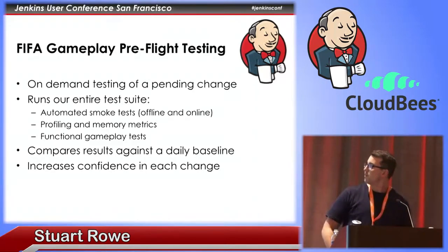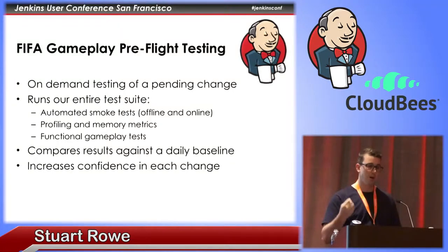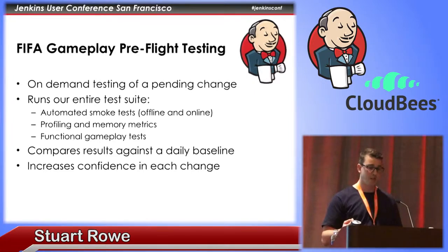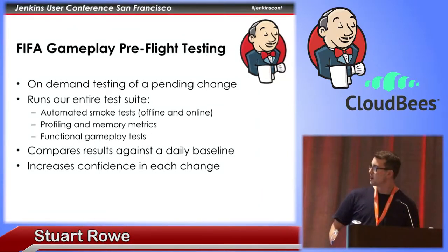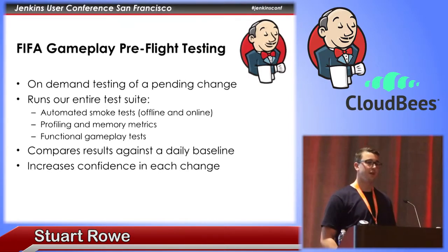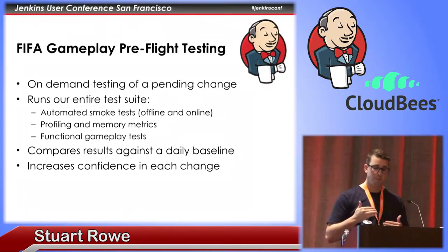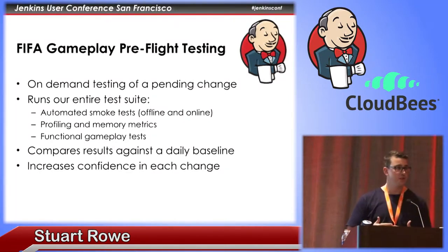A little bit of background on what FIFA uses our pre-flight test system for. It's used during our filing period of development when we want to verify bug fixes going into our game, to make sure those bug fixes aren't having any unexpected knock-ons on performance or stability. We take a pending change — we're using Perforce, so these changes are packed into changelists and shelves — and we run that change against our entire test suite, which includes automated smoke tests, profiling memory collection tests, and some functional gameplay tests. We take the results and compare them against a daily baseline created earlier in the day, and from that difference we can see what impact that change has. By using the system, we're able to increase our confidence in every change that goes into our game.